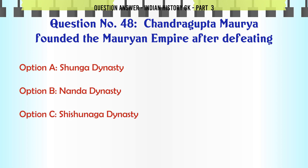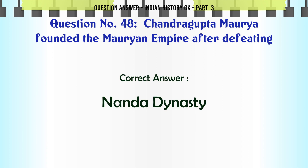Chandragupta Maurya founded the Mauryan Empire after defeating: A. Shunga Dynasty, B. Nanda Dynasty, C. Shishunaga Dynasty, D. Gupta Dynasty. The correct answer is Nanda Dynasty.